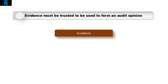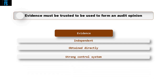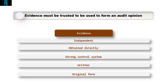For evidence to be deemed reliable, it needs to be the best possible evidence obtainable in the circumstances. Evidence must be trusted so it can be used to form the audit opinion. Ideally, evidence should be independent, obtained directly by the auditor, and if obtained from the client then from a strong control system — written and in its original form. If auditors obtain evidence meeting all these points, very little else needs to be obtained for that area.